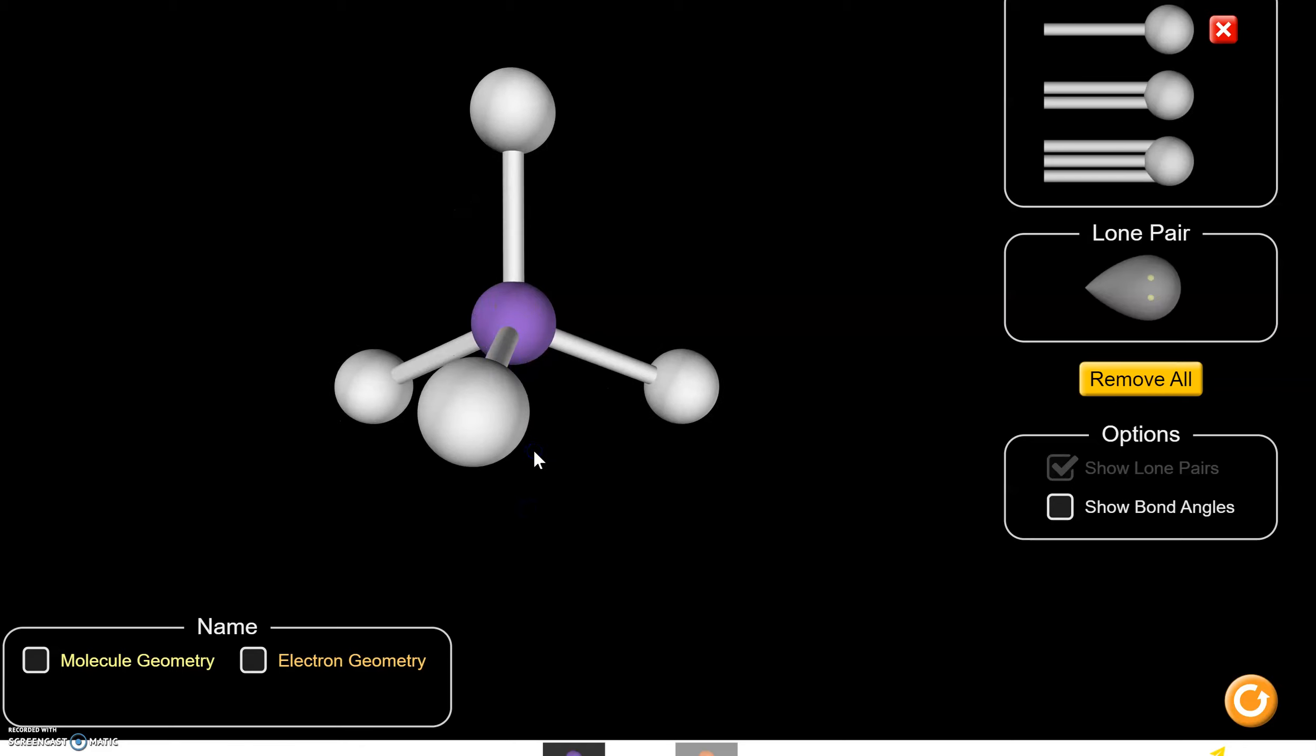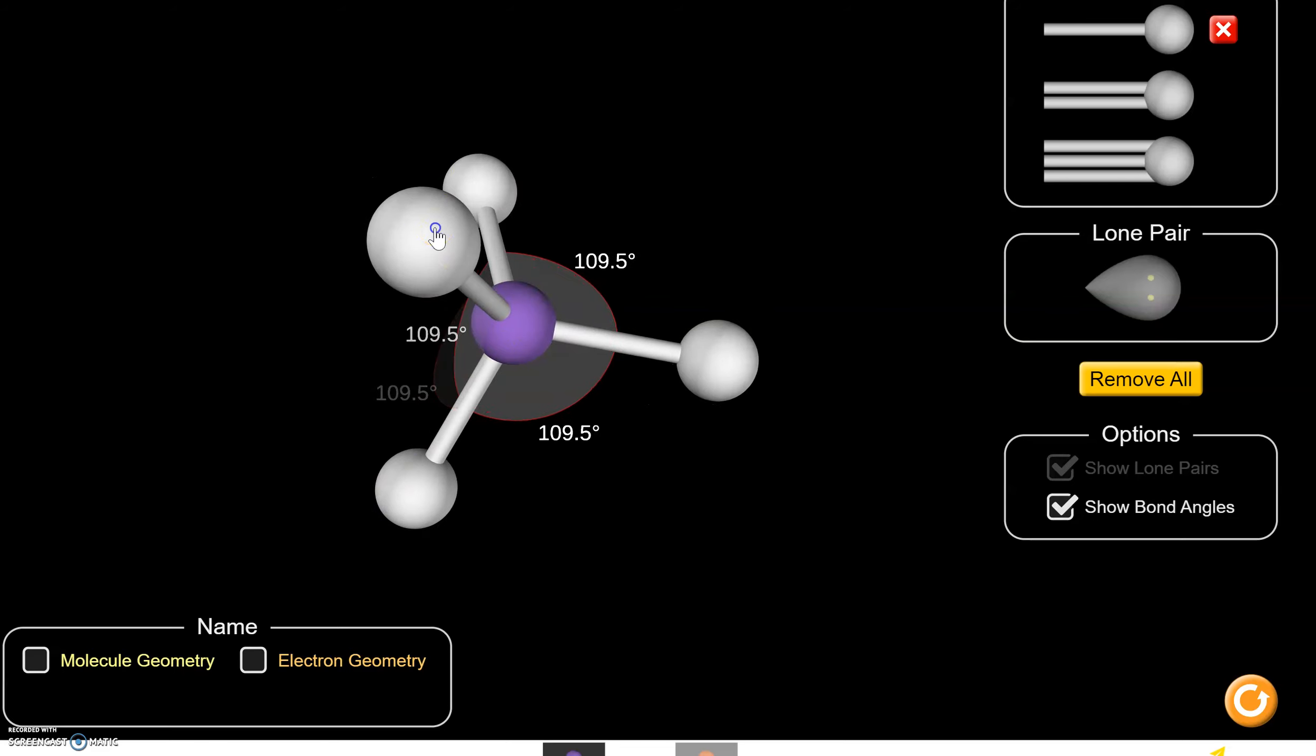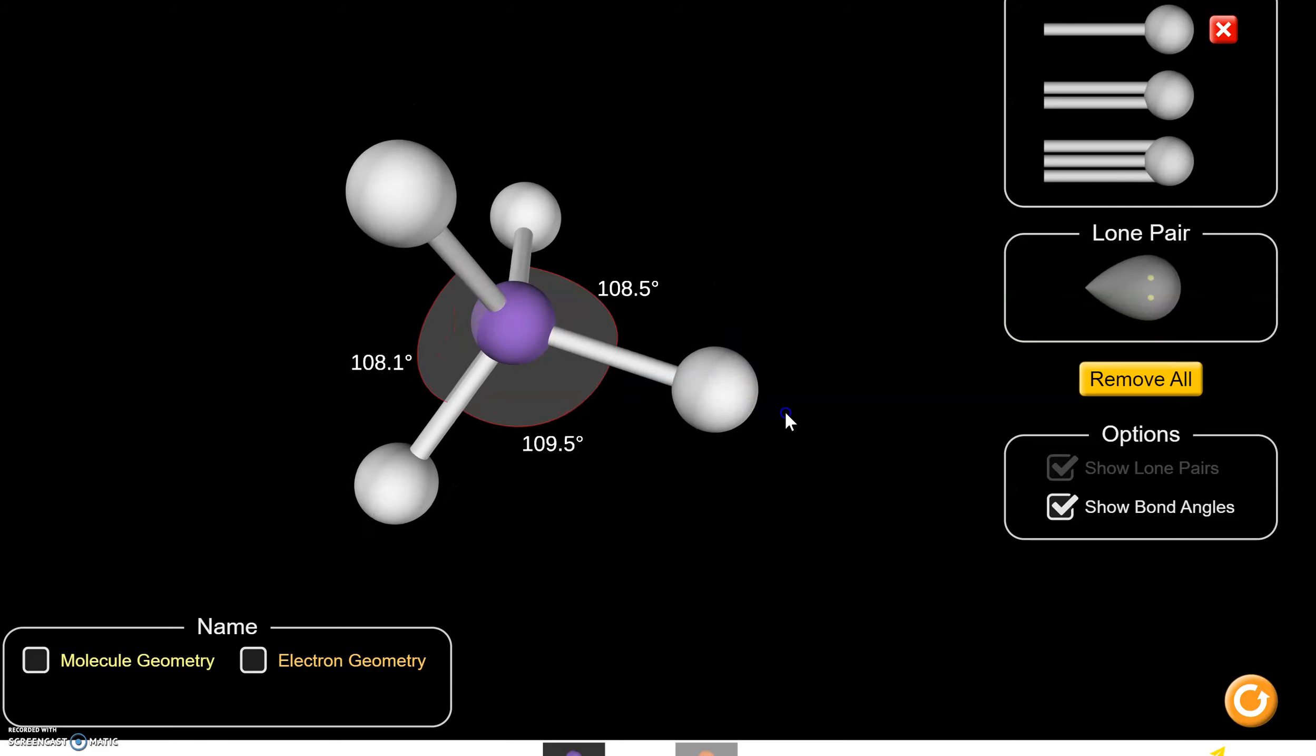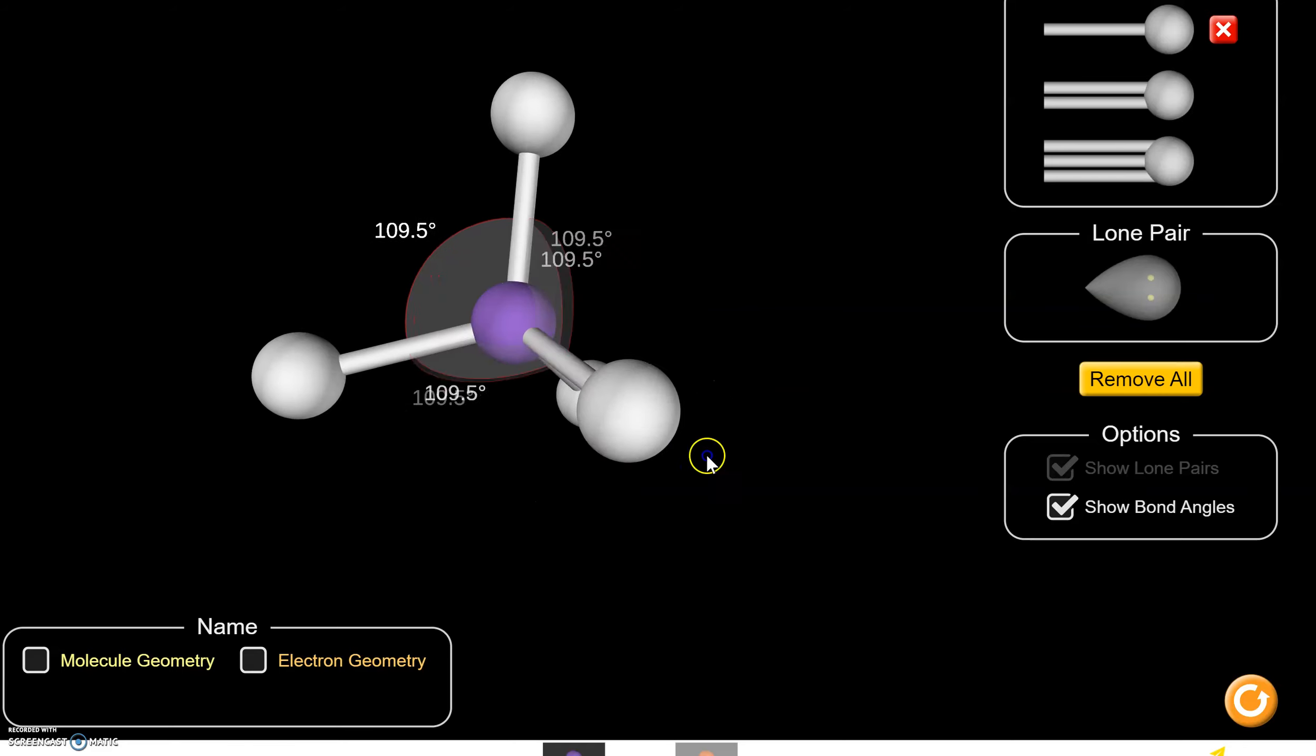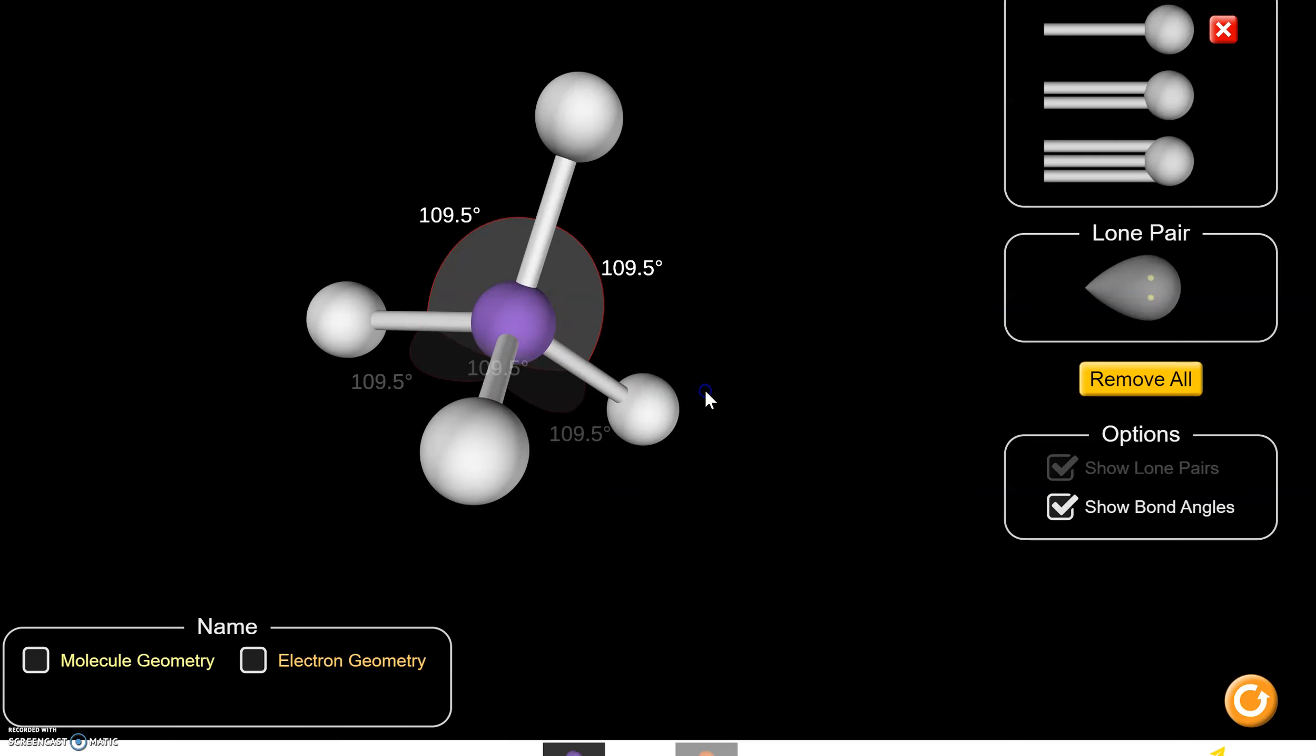And it does this because these atoms are being orbited by electrons. They're all like charges, and that means they repel each other. That's electron pair repulsion. That means a two-dimensional model just isn't sufficient to show what's really going on here. We need to be thinking in three dimensions.